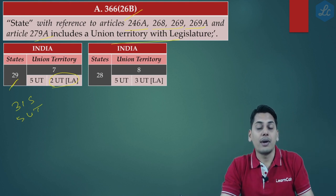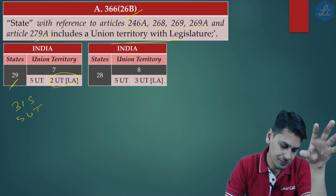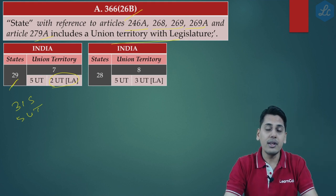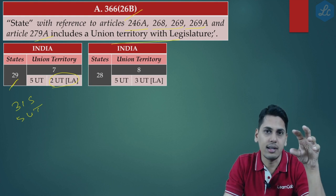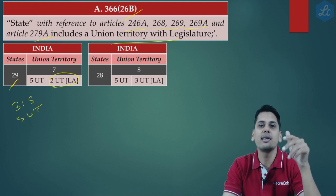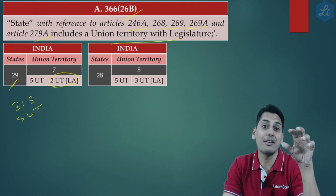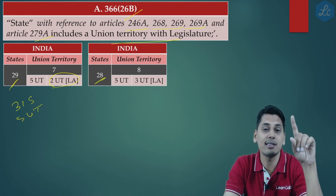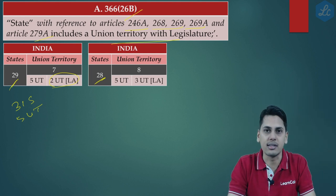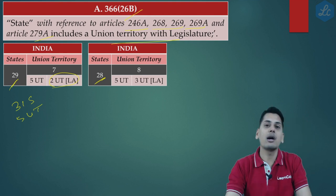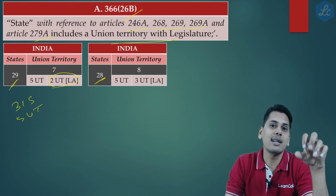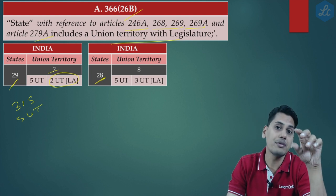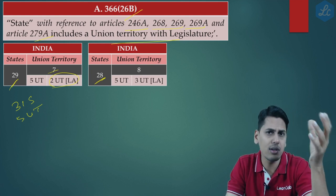Prior to reorganization, India had 29 states and 7 union territories. After reorganization, one state is subtracted and two union territories are added, making it 28 states. The union territory count goes from 7, plus 2 for J&K and Ladakh. However, there was another reorganization: two separate union territories — Dadra and Nagar Haveli, and Daman and Diu — were merged into one. So the count becomes 7 plus 2 minus 1, which stands at 8 union territories.